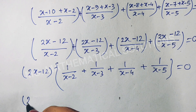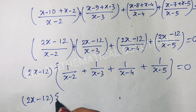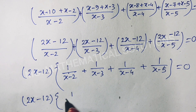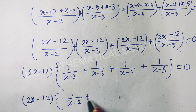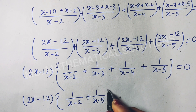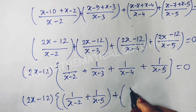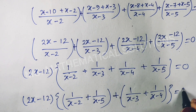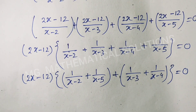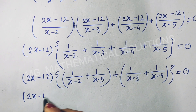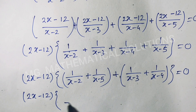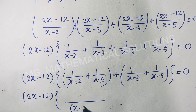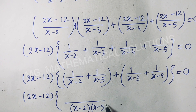So we have 2x minus 12 as a common factor. Now we rearrange: first we add the first and last terms, and second these two middle terms. So 1/(x-2) plus 1/(x-5) plus 1/(x-3) plus 1/(x-4) equal to 0. The LCM of (x-2) and (x-5) is (x-2)(x-5).